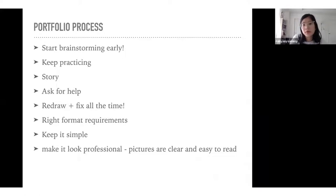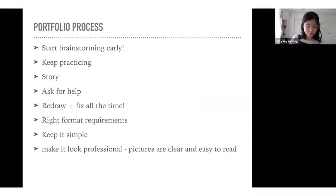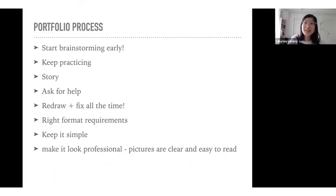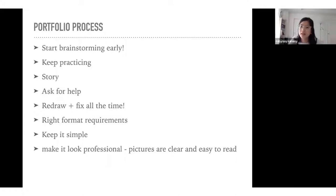Now for the portfolio process. The requirements usually come out around October or November. When I applied, it was early October; the year before it was near the beginning of November. I applied a few times. I would suggest you start brainstorming now because you can already search up the portfolio requirements online and have a basis of what you need to work on. Over the years they haven't changed it too much — the character portion and life drawing are usually always the same.